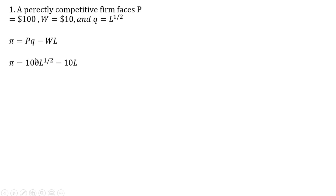Let's look at this numerically. A perfectly competitive firm faces a price equal to $100, the wage is $10, and the production function is given by Q equals L to the 1 half power. Setting up our revenue minus cost and making our substitutions in for the price is 100, the wage is 10, and our production function Q is L to the 1 half.